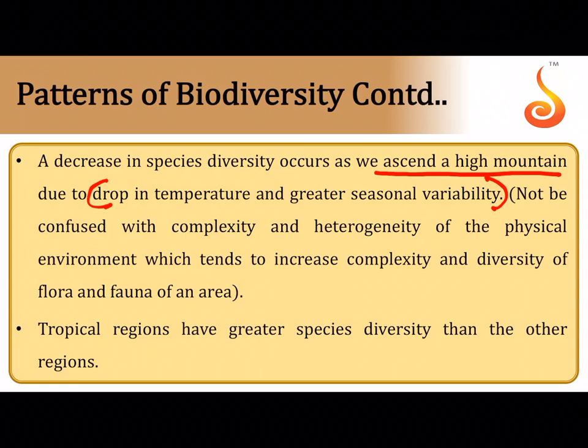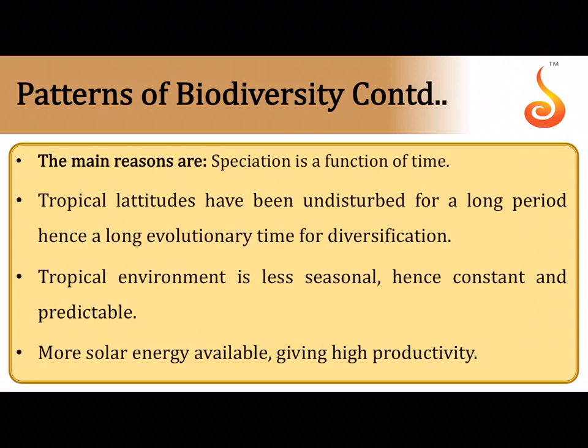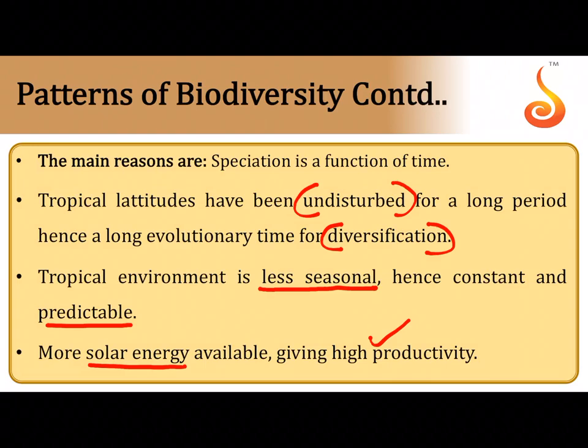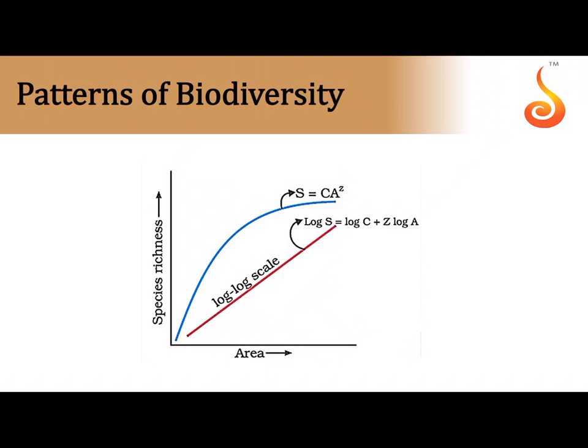Species diversity also decreases as we ascend to higher mountain regions due to a drop in temperature and greater seasonal variation. Tropical regions have greater species diversity mainly because they have remained undisturbed for very long periods, giving organisms a long evolutionary time for diversification. Tropical environments also show lesser seasonal variation — conditions are more constant and predictable. Greater sunlight throughout the year in tropical regions means more solar energy, leading to greater productivity (more organic matter per unit area per unit time).